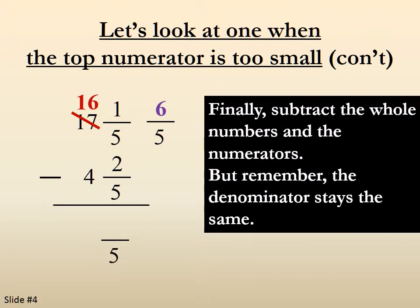So now we can go ahead and subtract. When we subtract the whole numbers, 16 minus 4 is 12. And when we subtract the numerators, 6 minus 2 is 4. The denominator did not change.